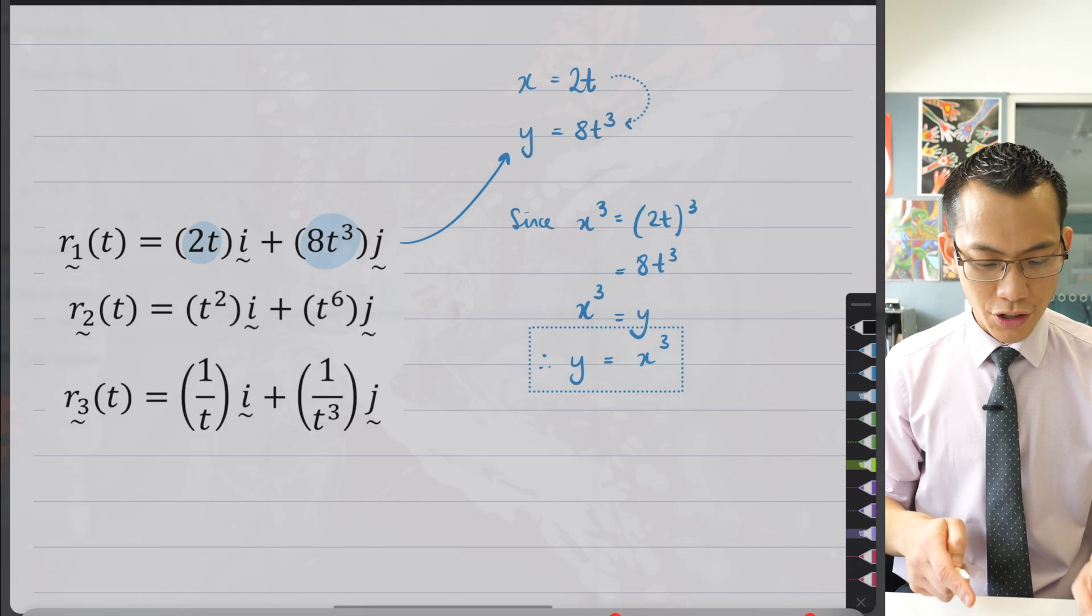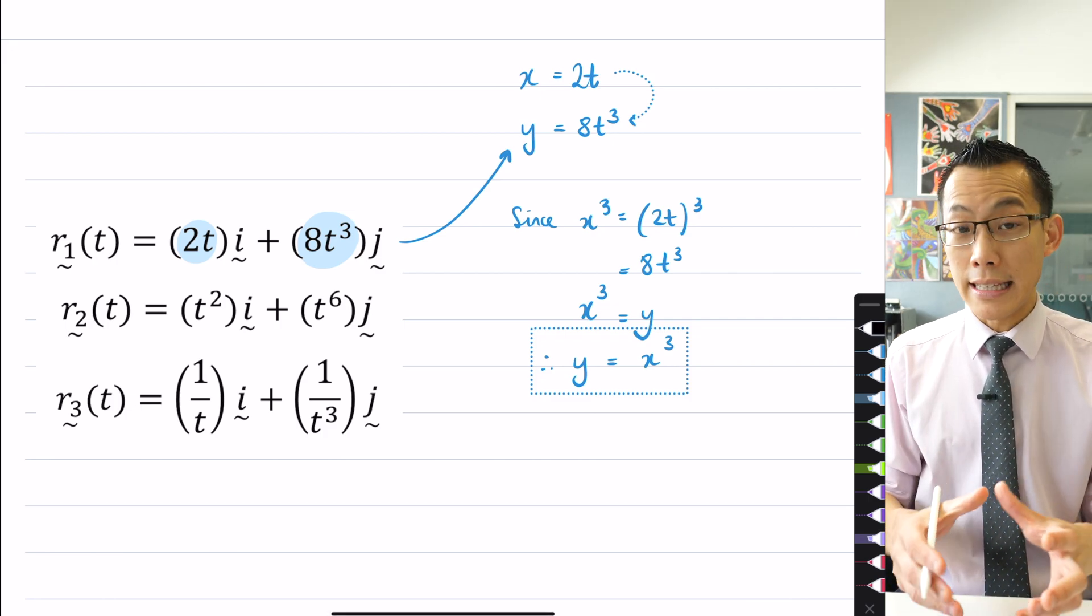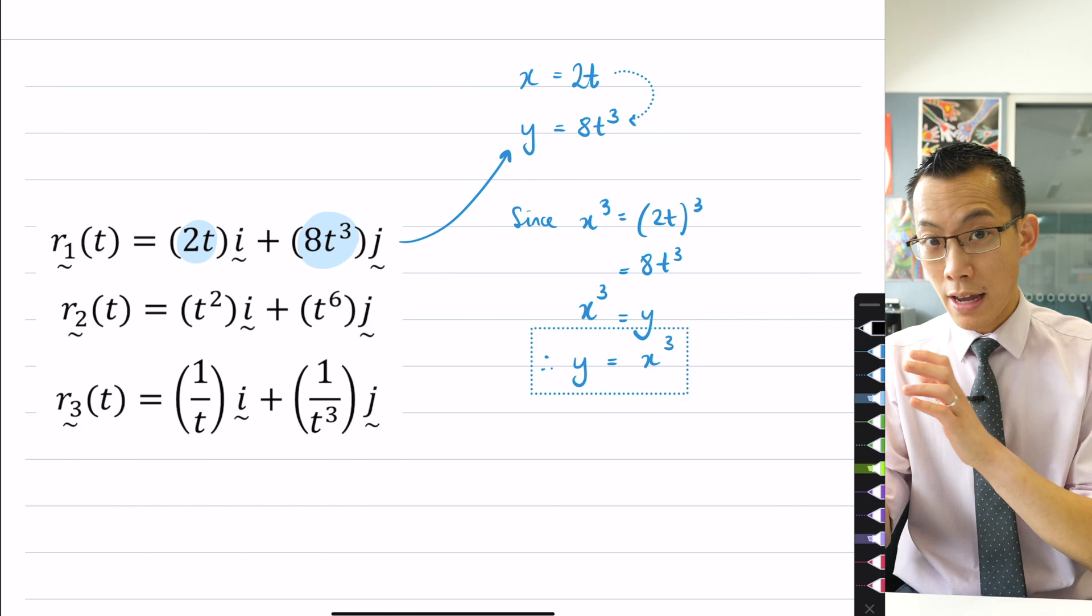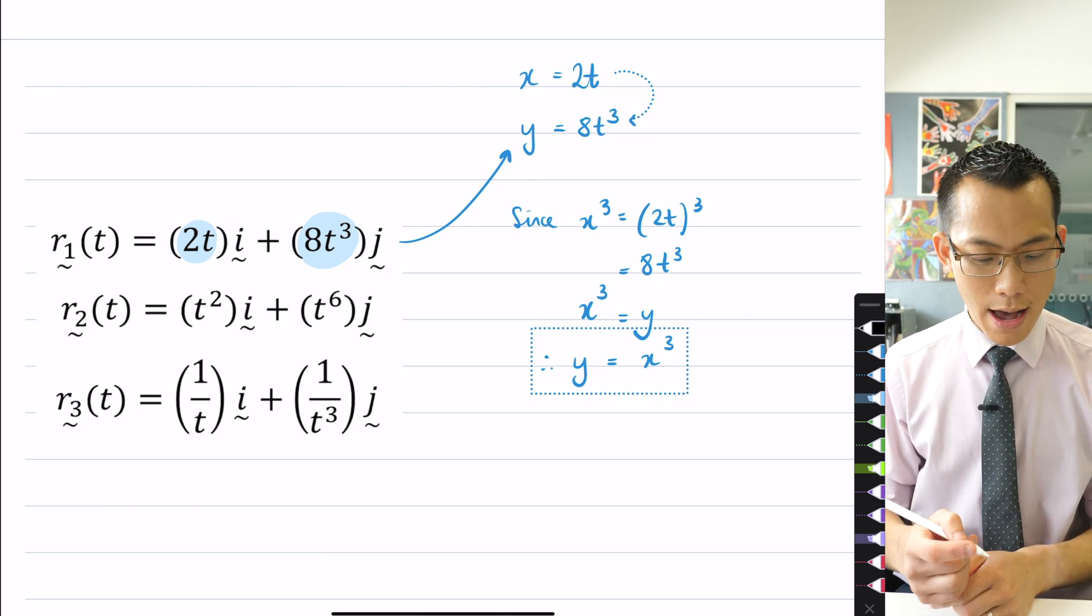So there's this idea here that the parametric equation and limitations of the parametric equation will lead to limitations on the Cartesian equation, specifically with regard to domain and range. Now, when you have a look back at the question, there's no domain restriction explicitly said, like t can only be between here and here, but there are some domain restrictions that are implied.